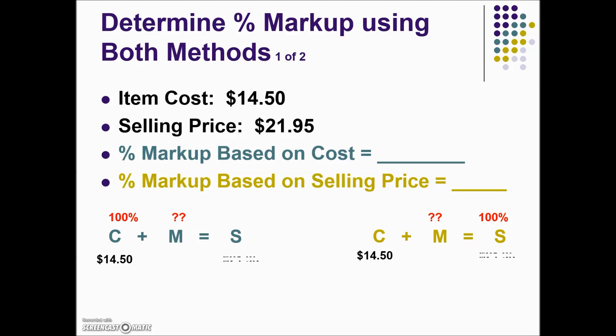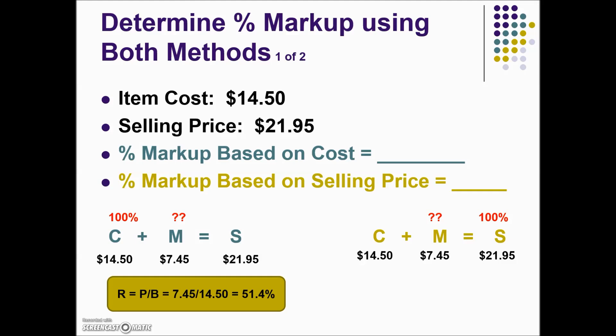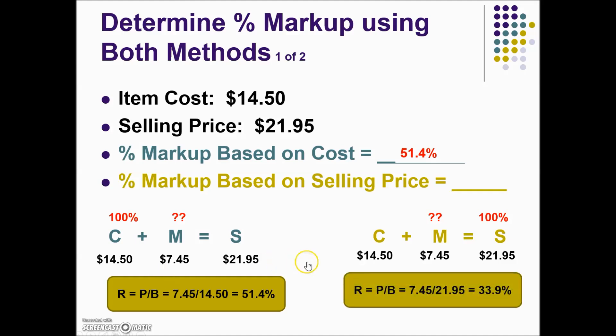The cost of this item is the same, the selling price is the same, but because our markup is based on cost in one and selling price on the other, we'll find that the markup rate is going to be different. From the selling price and the cost we can find our markup by subtracting cost from selling price — and everything looks the same — but it's because on the left hand side we have our markup based on cost. We end up with a part divided by base to come up with a rate, and converting this into a percentage gives us 51.4%. On the right hand side with our percent markup based on selling price, when we're looking for the rate and have the part and the base, the resulting rate is 33.9%.